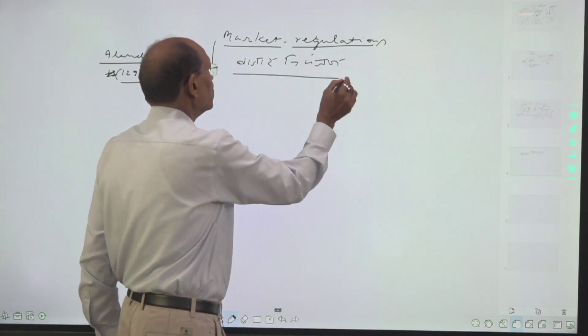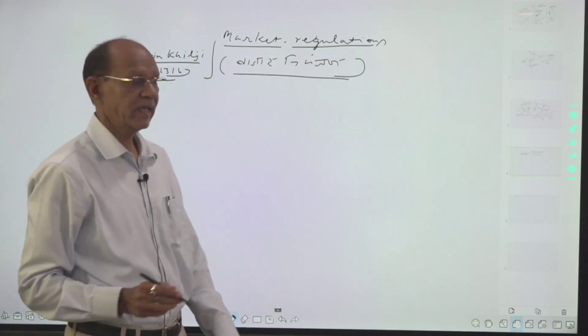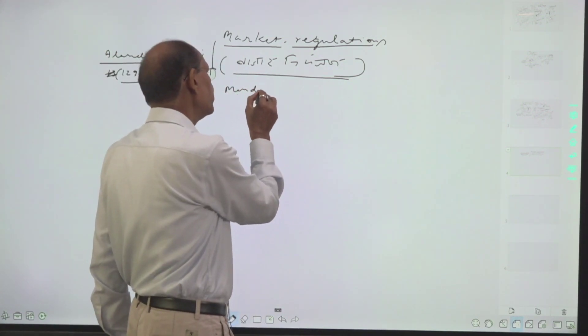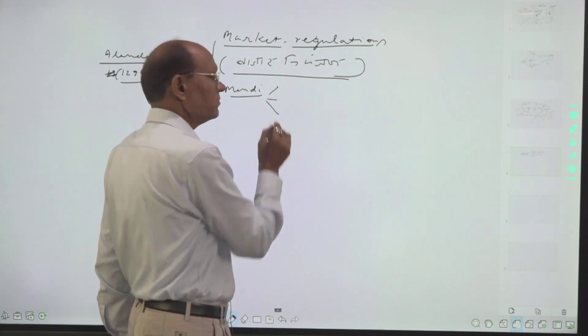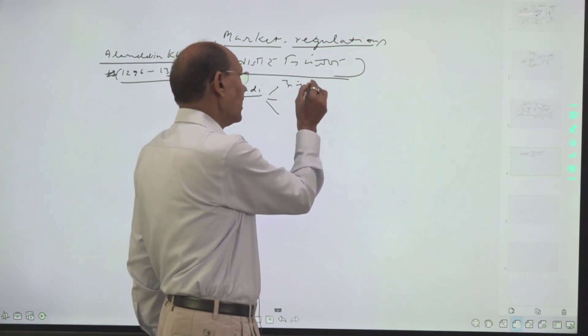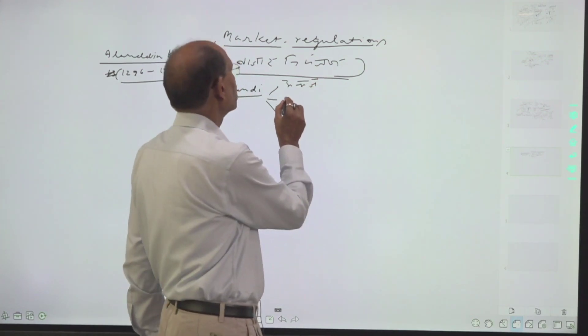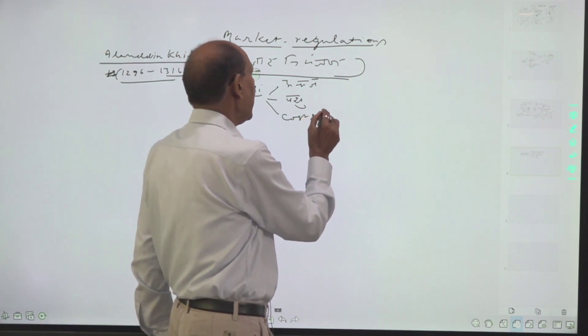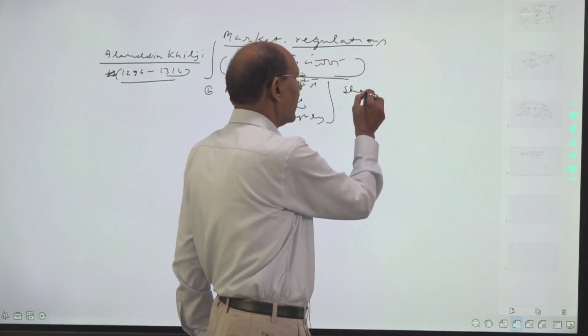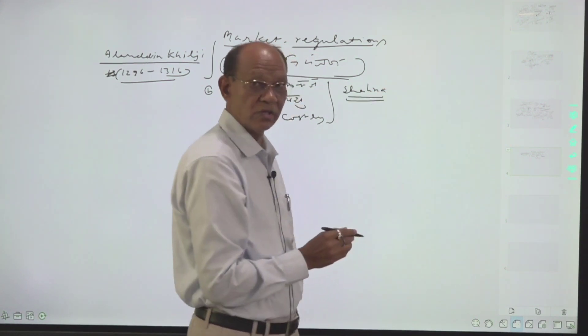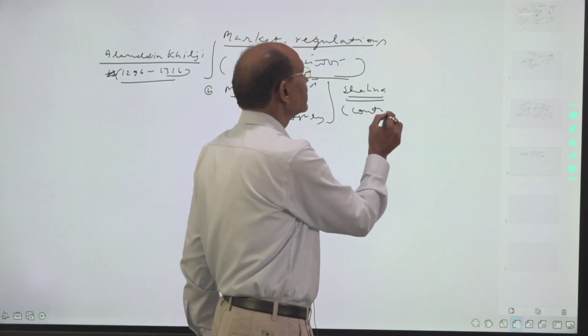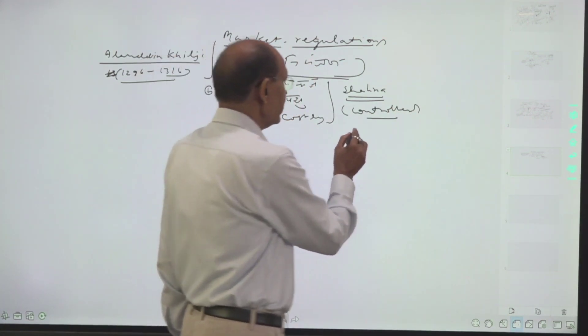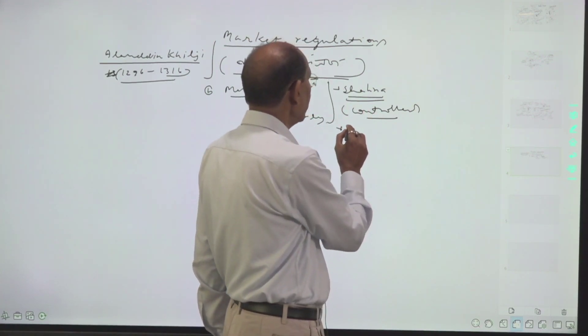There were three markets or mandis, and every mandi was put under the Shahna. Besides Shahna, other officers of mandis were like Najir.